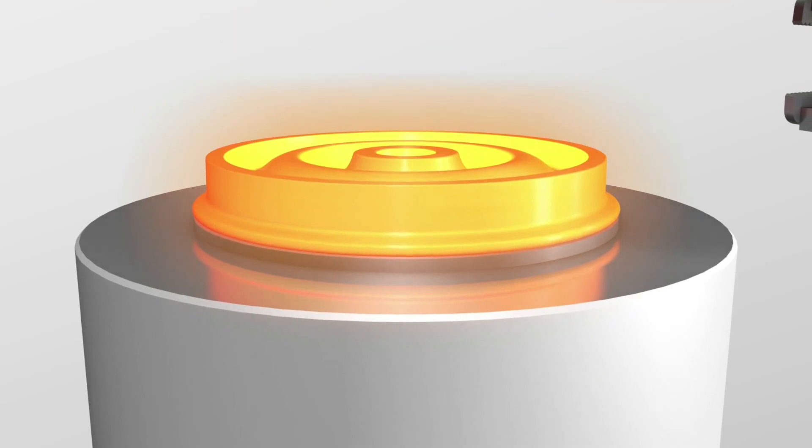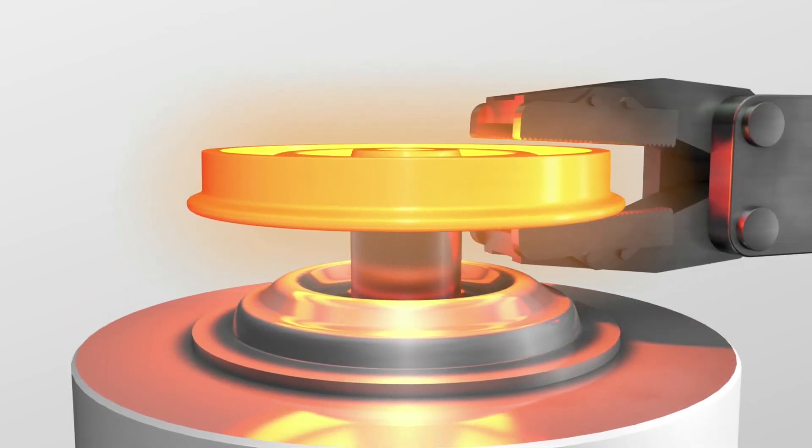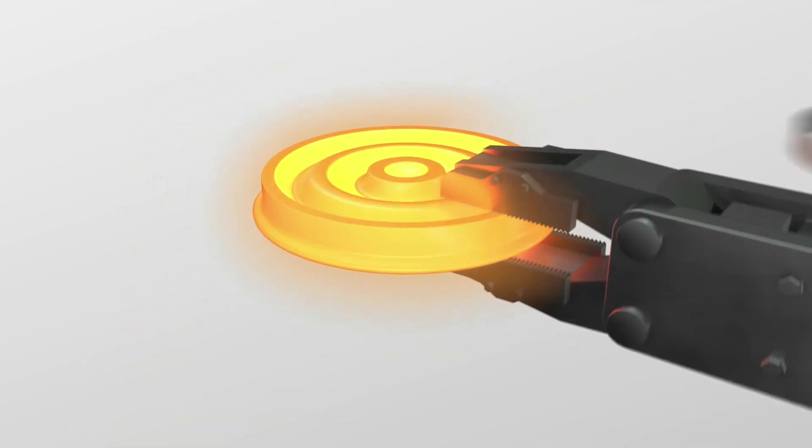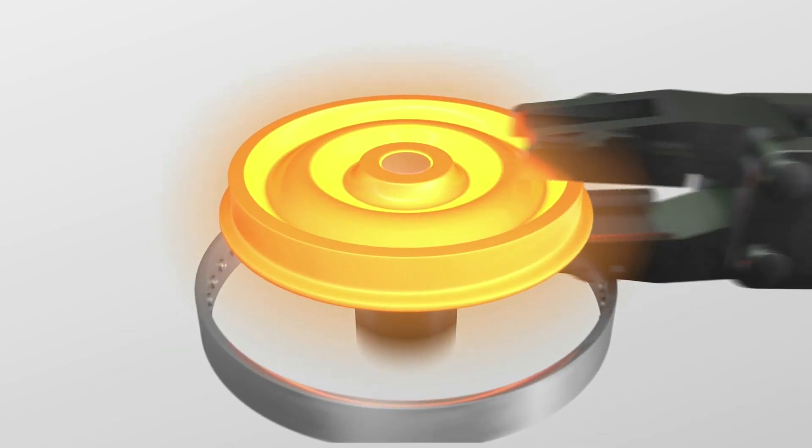A bending process gives the wheel its final shape and then the wheel rim is chilled in water, thus hardening it.